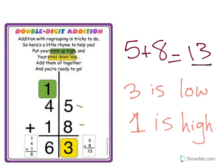We're gonna put the 3 on the low in the ones place, and then we're gonna put 1 in the tens place. We carry that 1, so the 1 is high and the 3 is low. That's regrouping - when the 3 is low and the 1 is high.